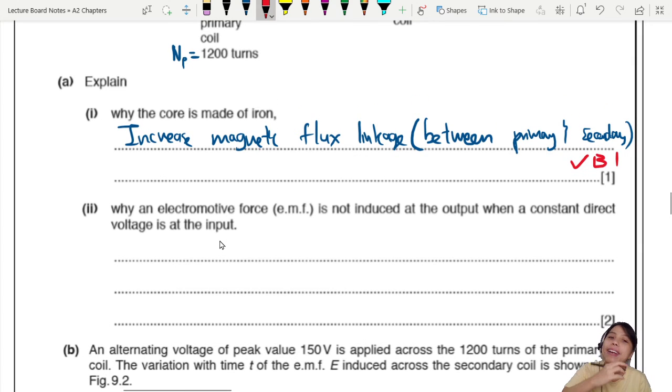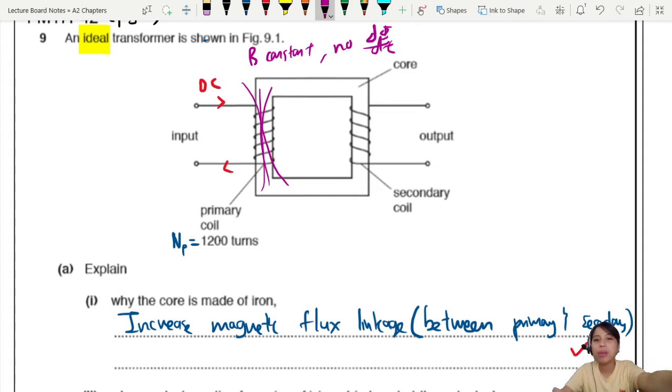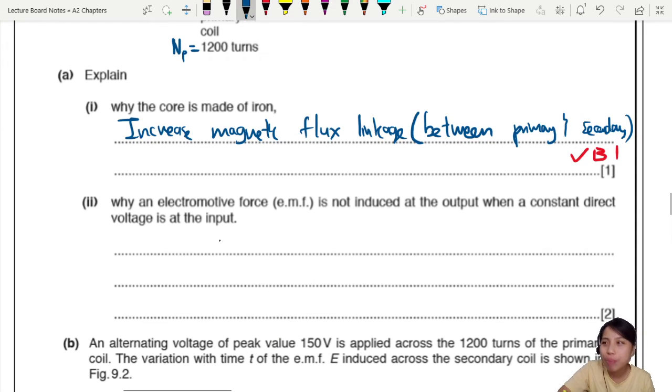Now explain why an EMF is not induced at the output when you have a constant direct voltage at the input. Why is there no EMF in the secondary when I have DC? If this is DC, then you just generate a magnetic field that is constant - your flux is constant. So no change in flux. What's going to happen in the secondary coil? Nothing! No induced current. Useless!